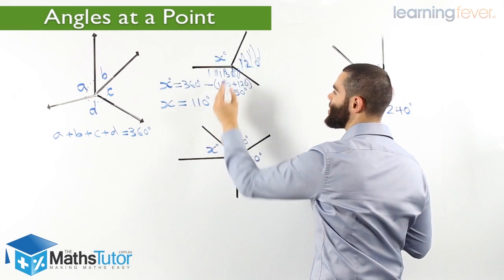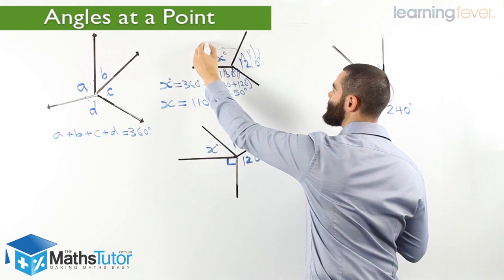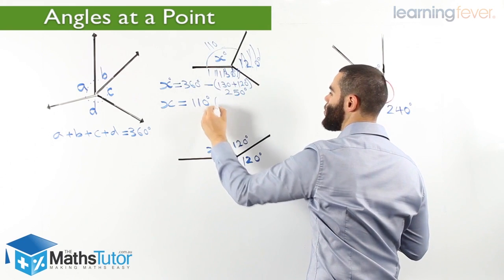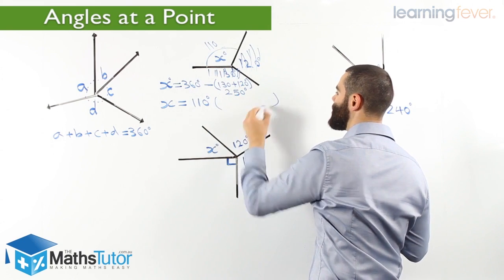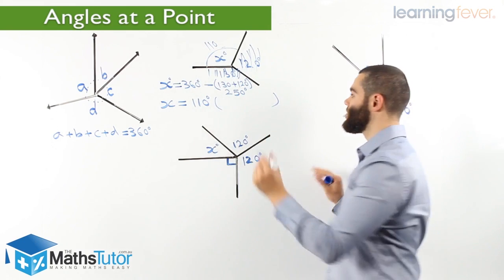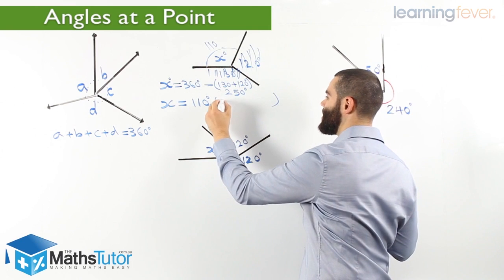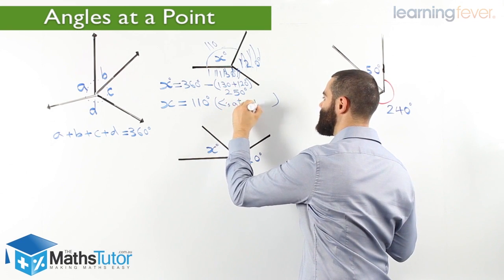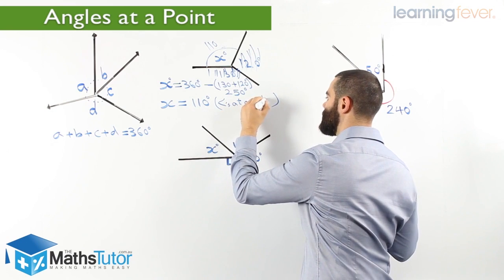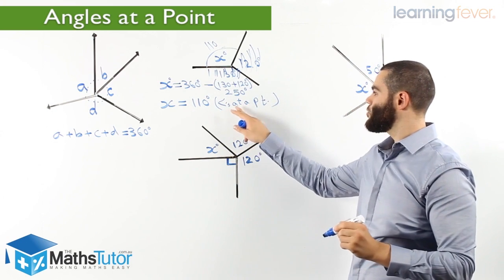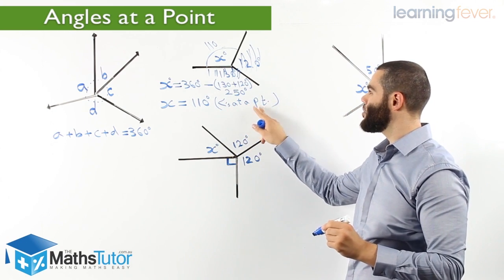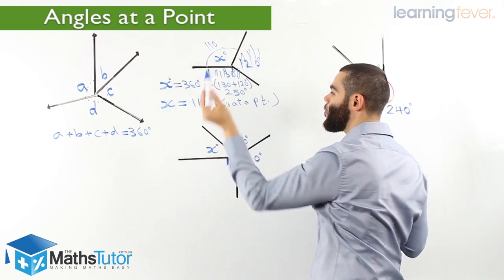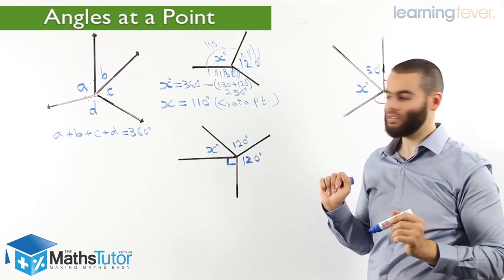So 360 is the total, take away 130, take away 120, X is going to be 110. And then, what is our reason? We always have to write our reason. Our reason is: angles at a point.